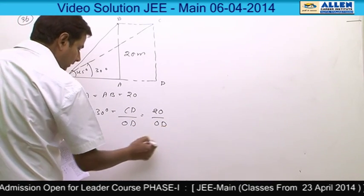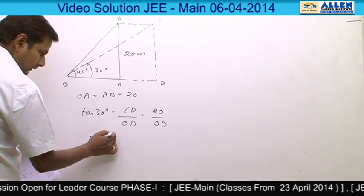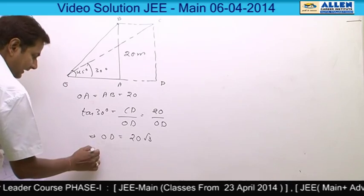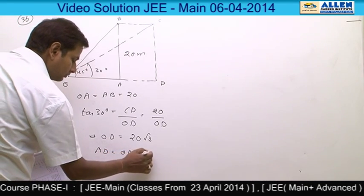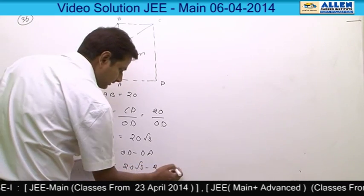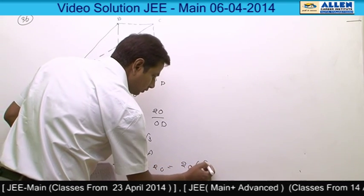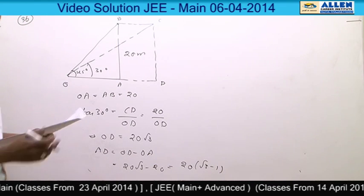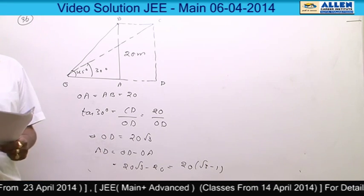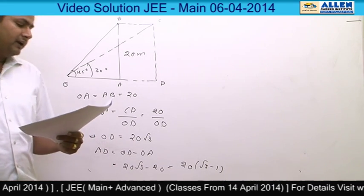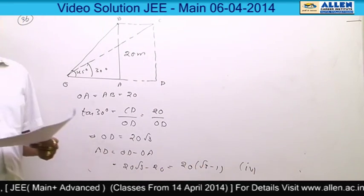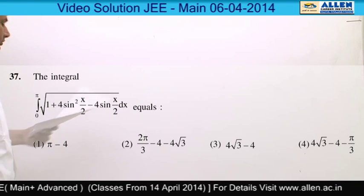Here we evaluate OD as 20 root 3. The distance AD becomes OD minus OA, which is 20 root 3 minus 20. This implies 20 times root 3 minus 1. This distance covered in 1 second, hence the speed of the bird is 20 root 3 minus 1 meters per second. Hence our final answer is option number 4.